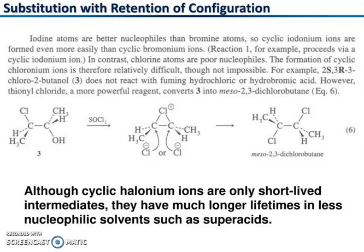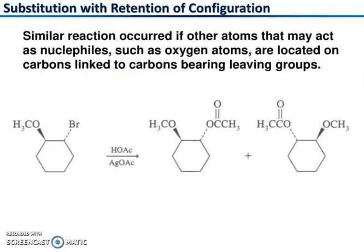You can see how thionyl chloride works: chlorine is pushing the nucleophile through a three-membered transition state, and chlorine can then attack either carbon, forming meso-2,3-dichlorobutane. Although cyclic halonium ions are only short-lived intermediates, they have much longer lifetimes in less nucleophilic solvents. Similar reactions occur if other atoms that may act as nucleophiles, such as oxygen atoms, are located on carbons linked to the carbon bearing the leaving group, leading to formation of the meso product.